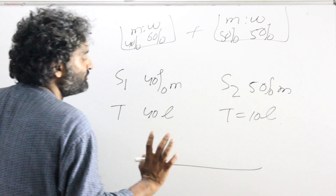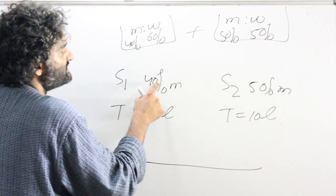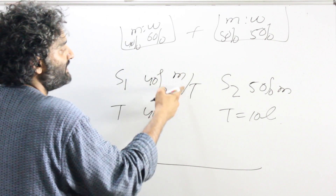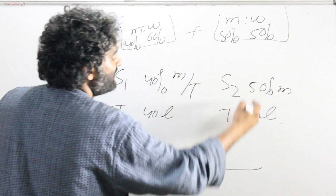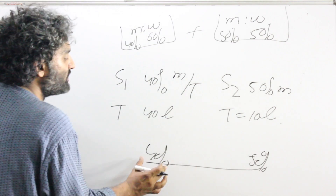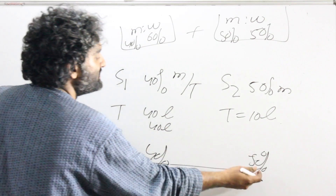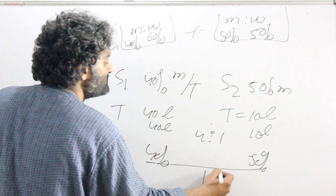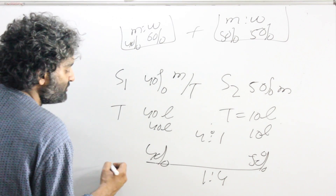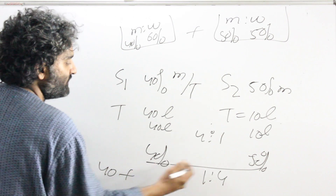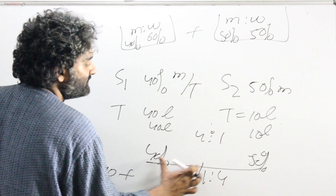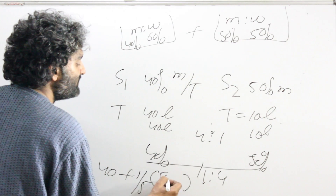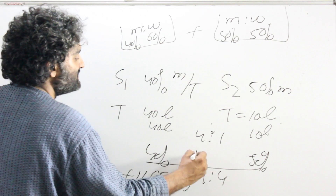We'll use the scale method. Draw the line and put the rates: 40% on one side and 50% on the other — the percent is a giveaway that these are rates. The weight for 40% is 40 liters and for 50% is 10 liters. The ratio is 4 is to 1. Reverse it: 1 is to 4. So the answer is 40 plus 1/5 of the whole thing, and the whole thing is 50 minus 40. So 40 plus 2 gives 42%, or equivalently 50 minus 8 equals 42%.